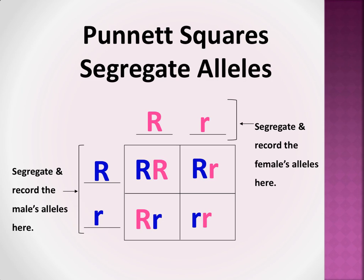To fill out this tool, you must first segregate each of the parent's alleles. For example, here's mom's two alleles. They're on separate lines, because she can only donate one to each child. Over here is dad's two alleles. They're segregated on separate lines as well.